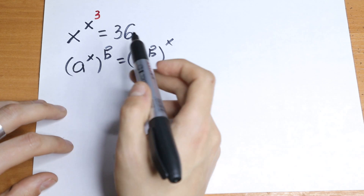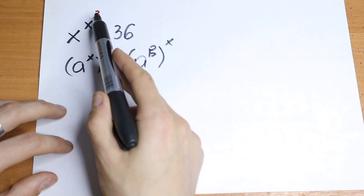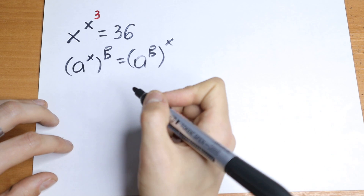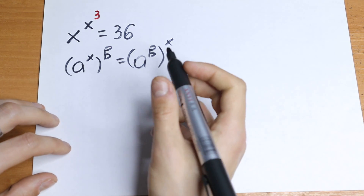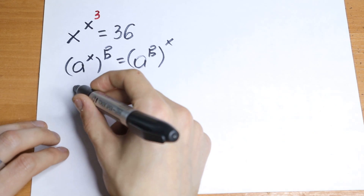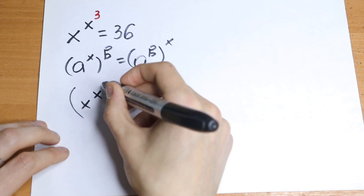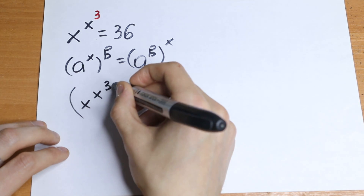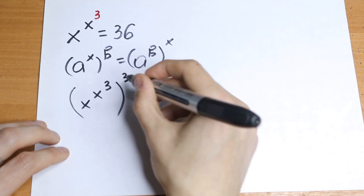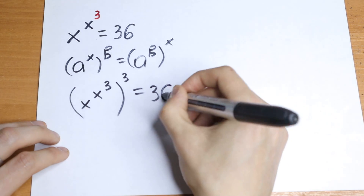So let's do this in our case. How can we create a 3 here and swap this? We raise both sides to the third power. So on the left side we have the expression to the third power, and on the right side to the third power as well.